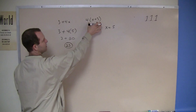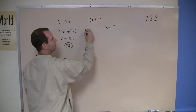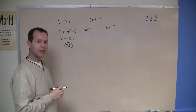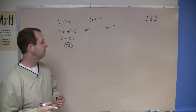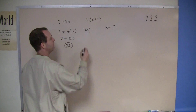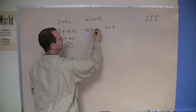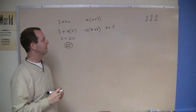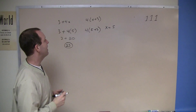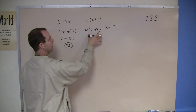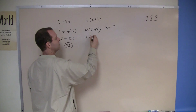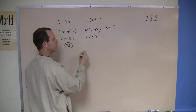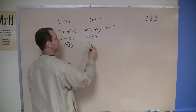On this next one, same idea — rewrite the expression, and everywhere I see the variable I insert the 5. So I have 4 times 5 plus 3. 5 plus 3 is 8, so I have 4 times 8, and 4 times 8 is 32.